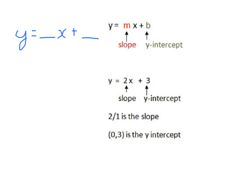Here is an example of an equation. You have 2 over 1, or just 2, as your slope — your rise over run — and then the 3 at the end is going to be your y-intercept, so where the line crosses the y-axis.